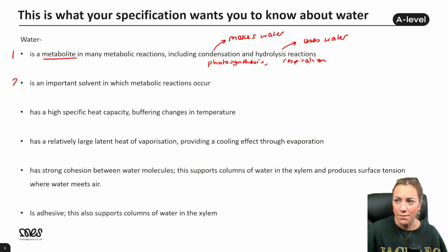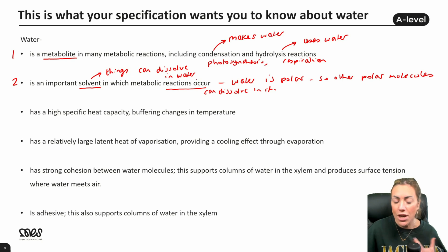The second one, it's an important solvent in which metabolic reactions occur. Now solvent basically means things can dissolve in it. Things can dissolve in water. Now this is because water is polar so it has that uneven distribution of charge so other polar molecules can dissolve in it. Now why is this useful? Well for metabolic reactions to occur, if we have a solution, the reaction will occur more quickly. Reactions occur quicker in solution. It might be worth remembering that because if you do have to give the advantage of water being a solvent, then we could say it's an advantage because reactions do occur quicker in solution.